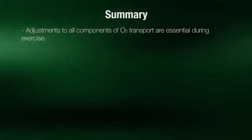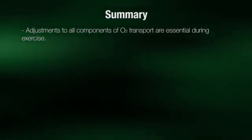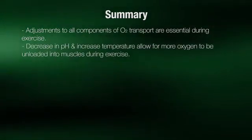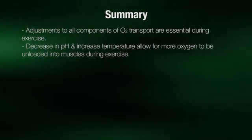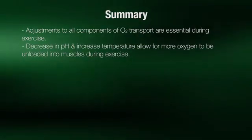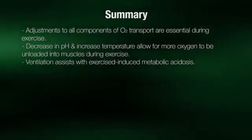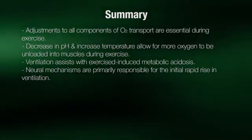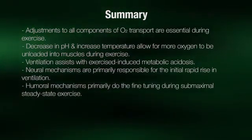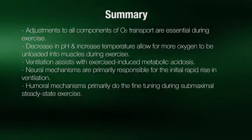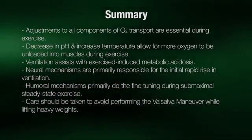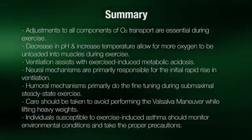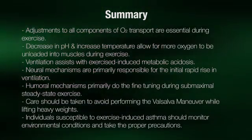In summary, adjustments to all components of oxygen transport are essential during exercise to ensure adequate oxygen delivery to muscles. A decrease in pH and an increase in temperature allow for more oxygen to be unloaded from hemoglobin into muscles during exercise. Ventilation also assists with exercise-induced metabolic acidosis. Neural mechanisms are primarily responsible for the initial rapid rise in ventilation, while humoral mechanisms do the fine-tuning during submaximal steady-state exercise. Care should be taken to avoid performing the Valsalva maneuver while lifting heavy weights. Also, individuals susceptible to exercise-induced asthma should monitor environmental conditions and take the proper precautions.